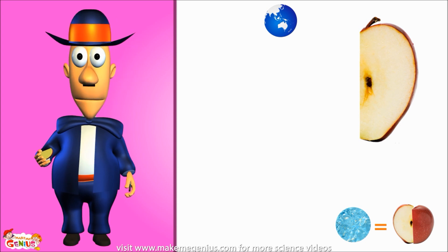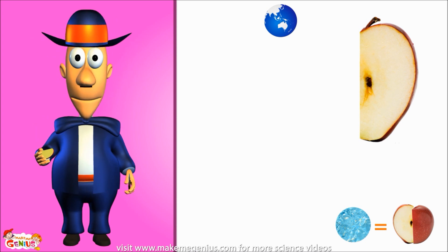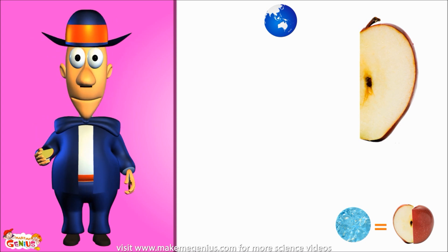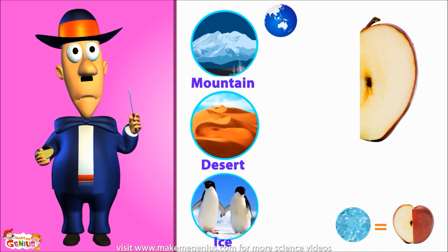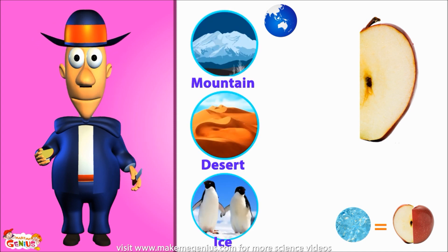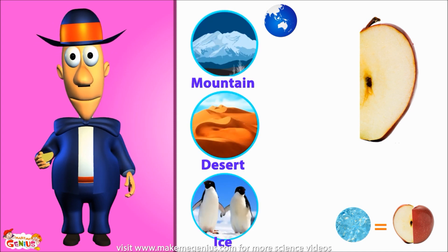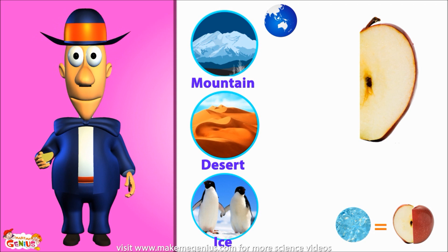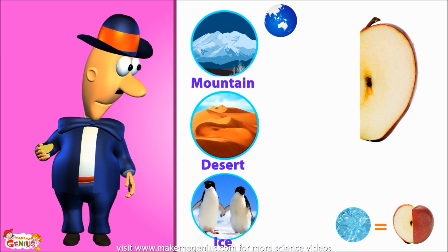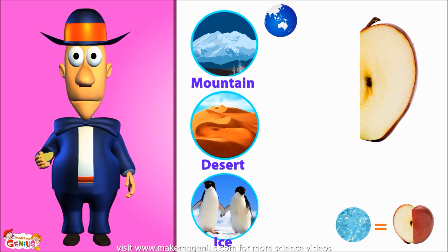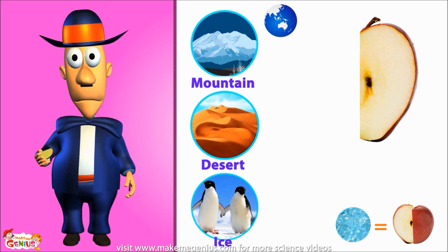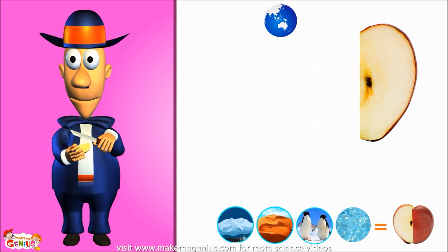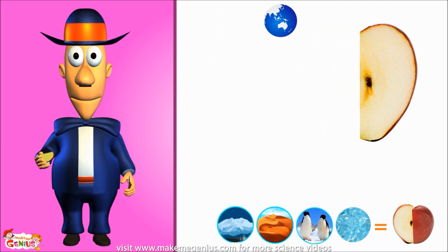But again, we can't use all the remaining land not covered by water to grow food either. On half of this available land, we have mountains, deserts, and ice, so we can't grow any plants for food there. Let's cut this piece of apple into two parts — now we're only left with an eighth part of an apple, one-eighth part of the Earth.